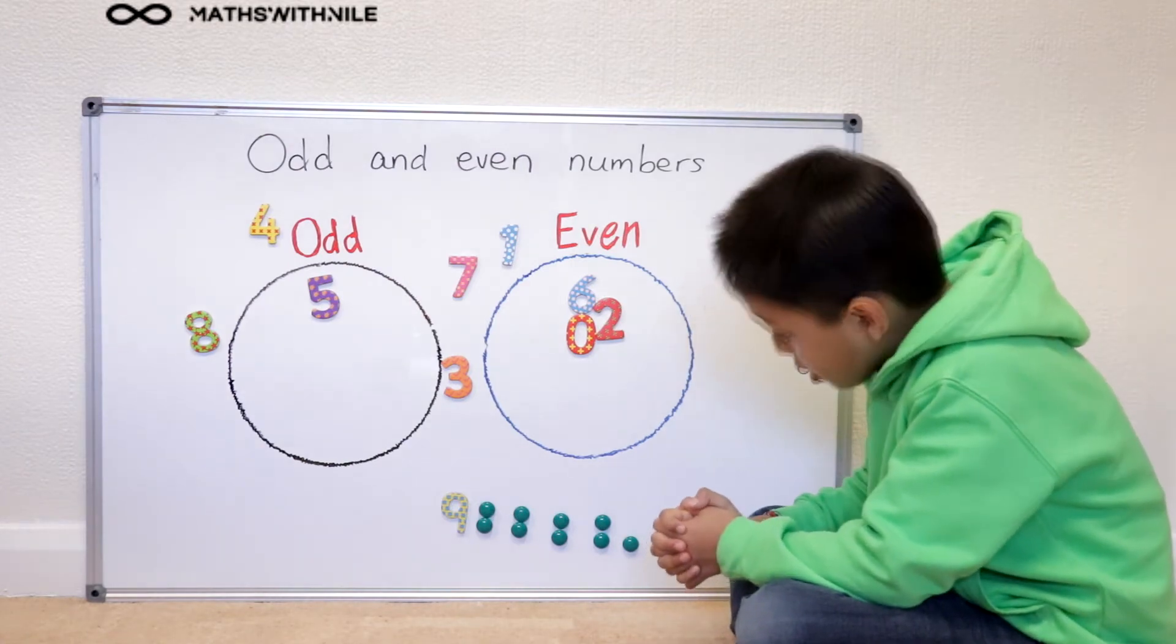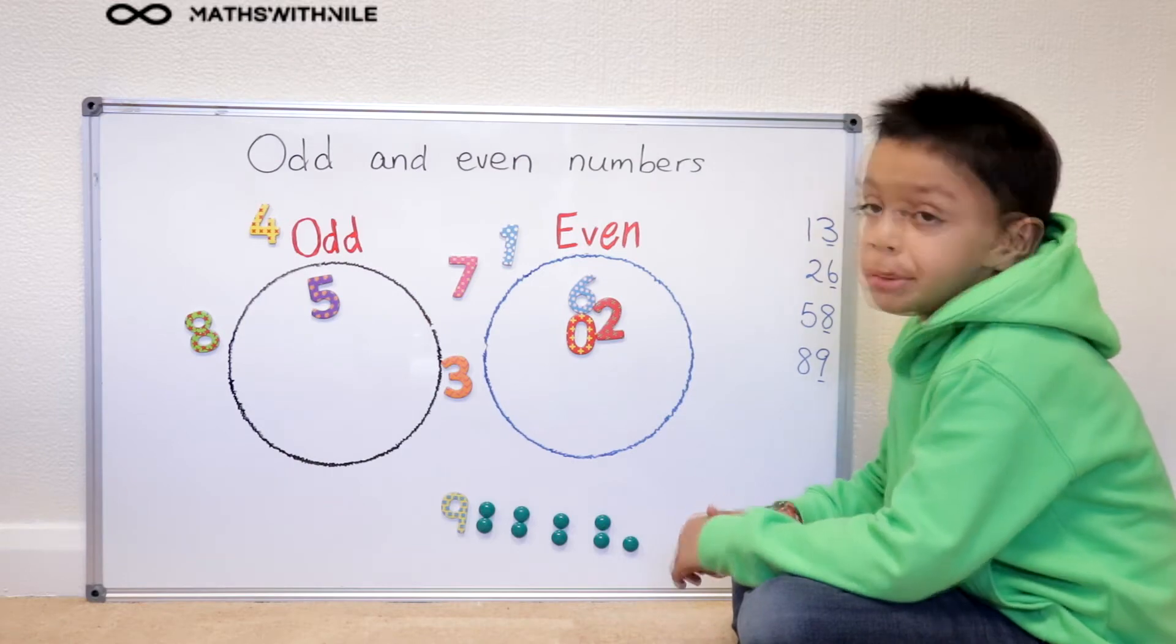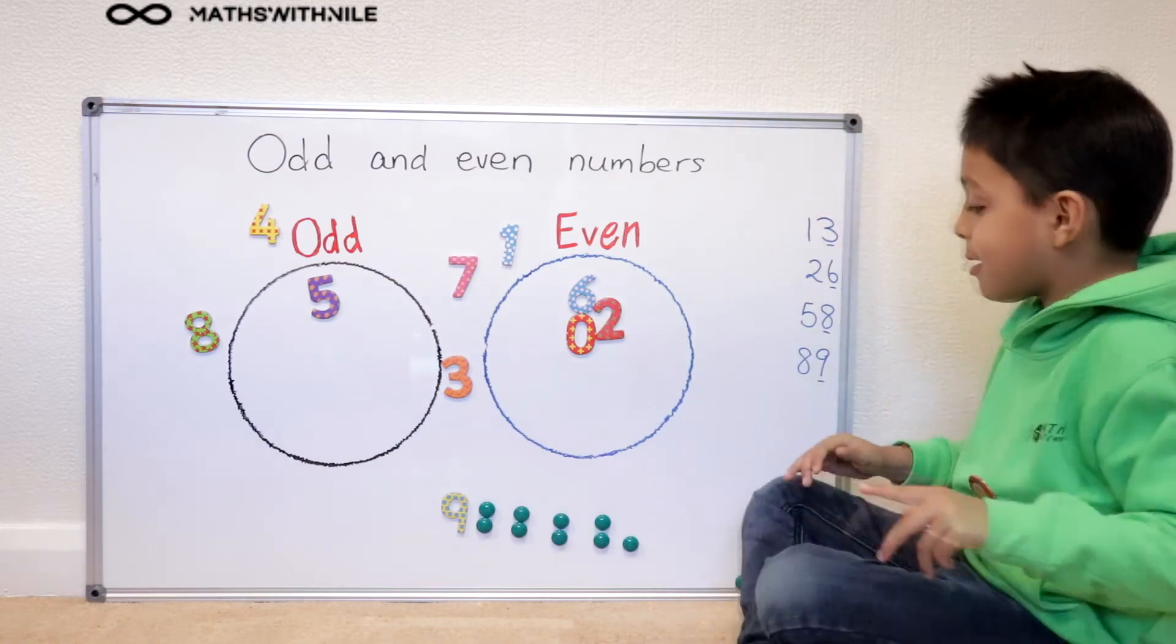So we got nine, we got four lots of twos and we got one left over, so it is an odd number.